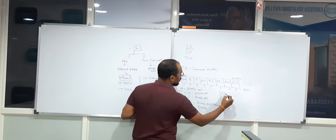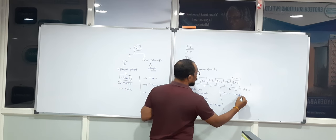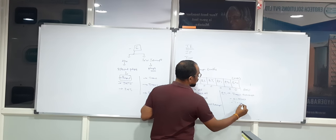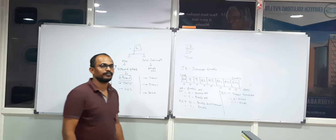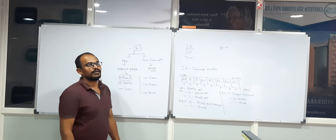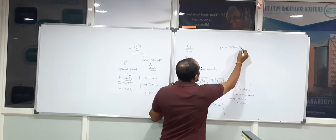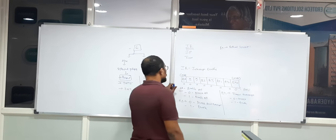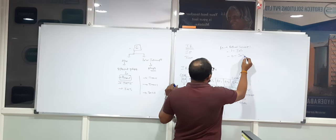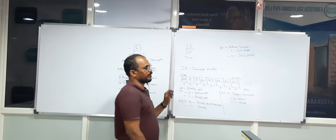The next bit is ET1. This bit helps to enable or disable your Timer 1 interrupt. Logic 0 disables Timer 1 interrupt, and logic 1 enables your Timer 1 interrupt. Next, EX1 — this bit will help us to enable or disable External Interrupt 1, which is INT1 from the microcontroller. Logic 1 enables INT1 interrupt, logic 0 disables INT1 interrupt.